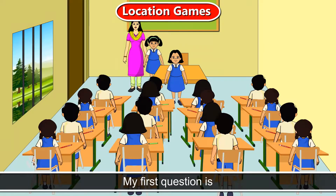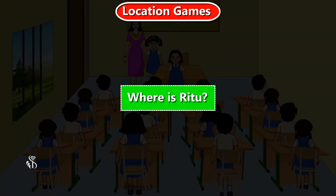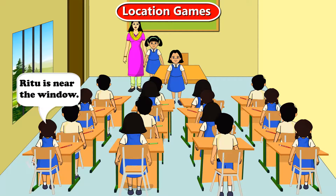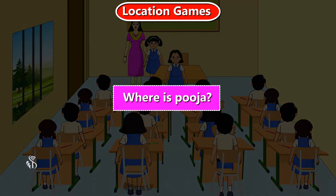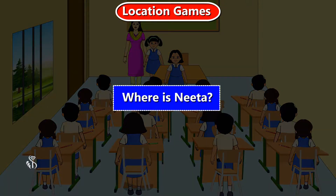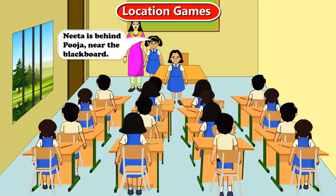My first question is: where is Ritu? Ritu is near the window. Where is Pooja? Pooja is standing in front of the class. Where is Neeta? Neeta is behind Pooja, near the blackboard.